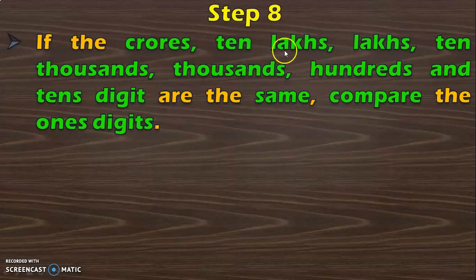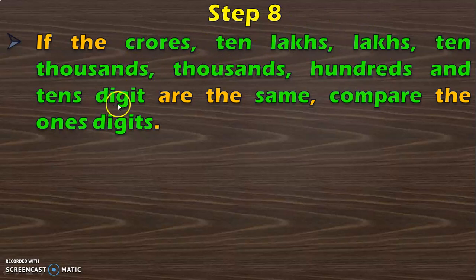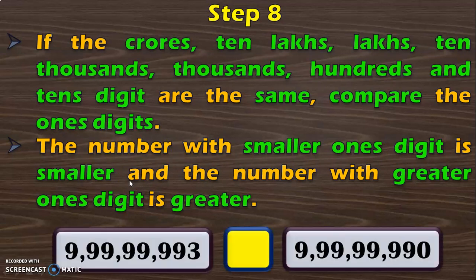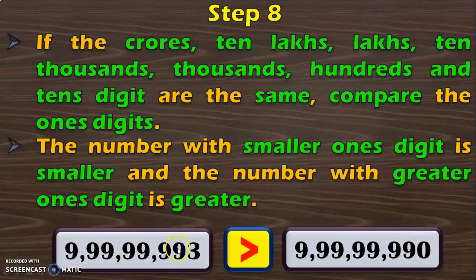Now, you have a situation where all the place values — crore's, 10 lakhs, lakhs, 10,000th, thousandth, hundredths and tens digits — are the same. So we have the last and least place value which is the 1's digit which you have to compare. The number with smaller 1's digit is smaller and the number with greater 1's digit is greater. Here you have 3 in the 1's place in one number and 0 in the 1's place in another number. So you conclude that 3 is greater than 0, and with that you say 9 crore 99,99,993 is greater than 9 crore 99,99,990.